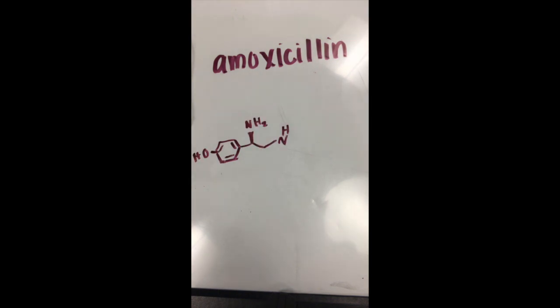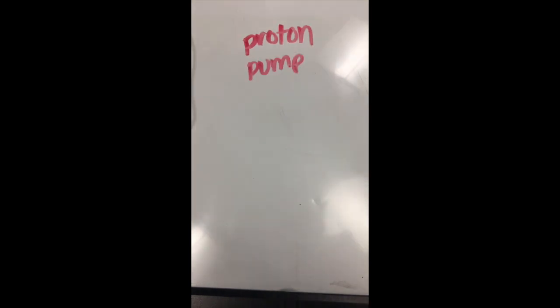Amoxicillin is usually prescribed as part of the treatment for Helicobacter pylori. Along with this, a proton pump inhibitor is also prescribed.